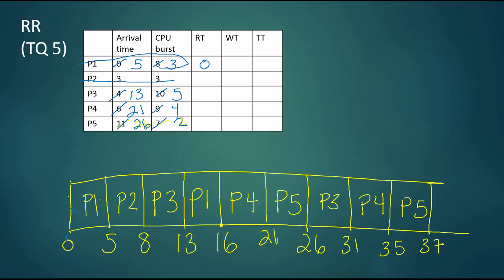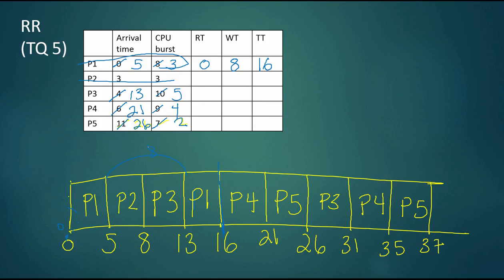For the turnaround time, you take the last entry — P1 finished at time 16 and arrived at time zero, so P1's turnaround time is 16. You can then subtract the CPU burst time to get the wait time: P1 was active for 16 time units, eight on the CPU, and eight waiting. Keep in mind that response time is a one-time measure and is the first measure of wait time.